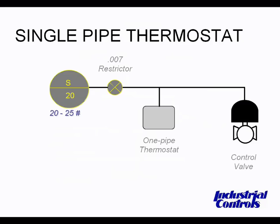We're going to go on to room thermostats now. The first one we'll talk about is the single-pipe thermostat. Note there is only one piping connection to the thermostat, and a 0.007-inch orifice is installed in the main air supply feeding the thermostat and the controlled device. The restrictor is placed in the airline because the inlet air to the low-volume controller must be of a smaller volume than can be bled off by the controller's nozzle. If no restrictor were in the line, the control device would immediately go to full stroke and would be stuck there.